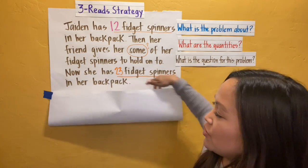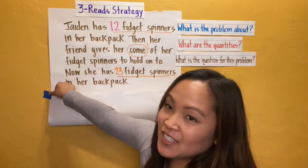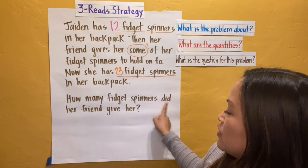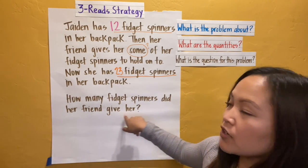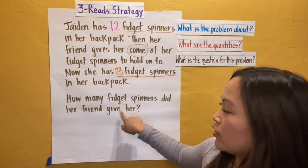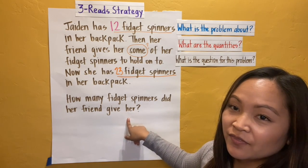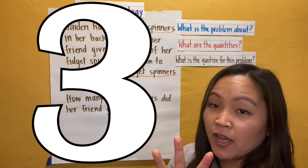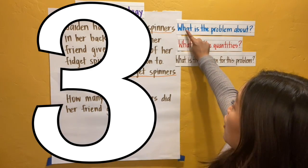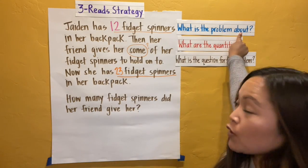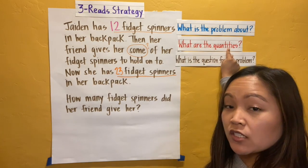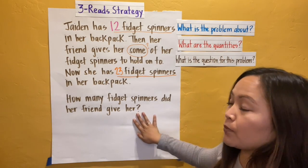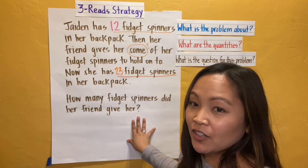This is the question: how many fidget spinners did her friend give Jaden? Great job. So we've read this problem three different times. We've thought about what the problem is about, talked about what the quantities are, and now we know the question of the problem. So now we're going to solve it.